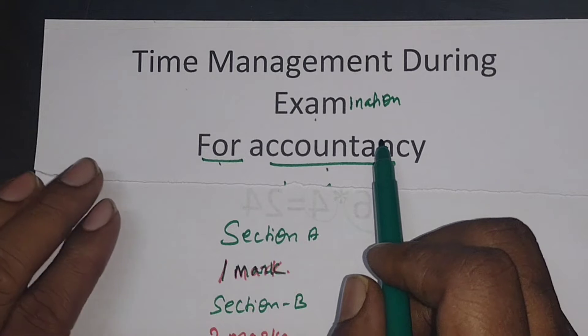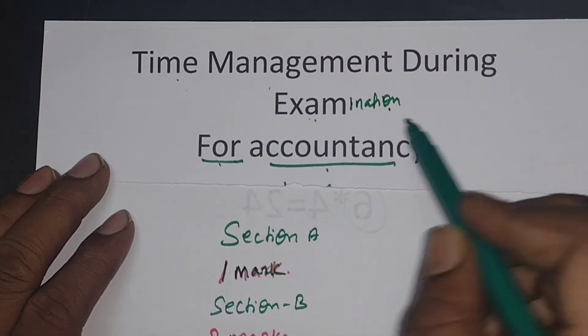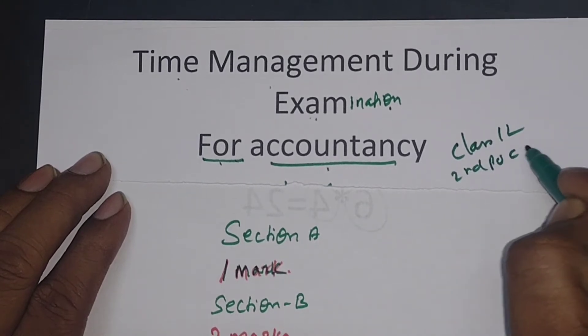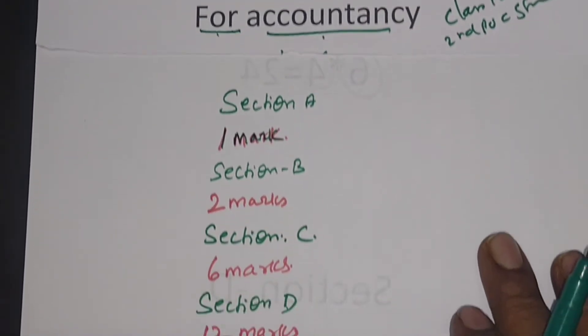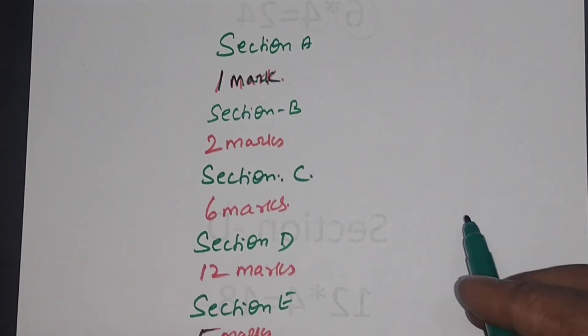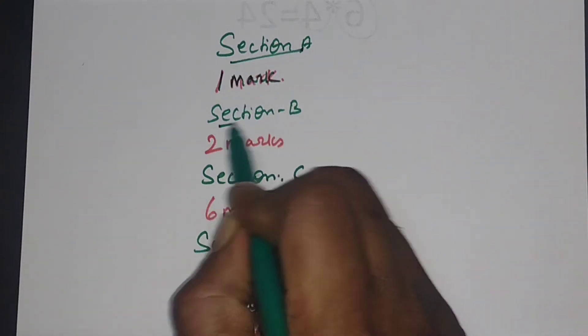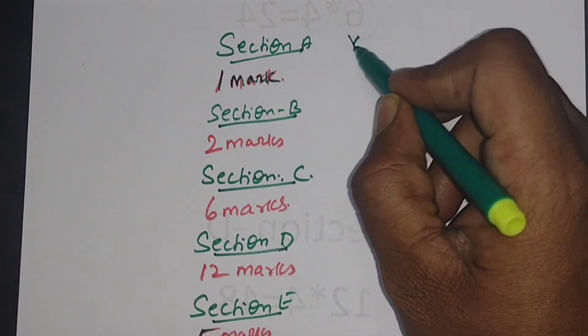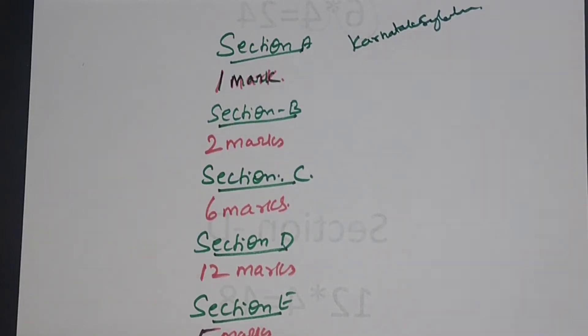Welcome back to Shokmar classes. The most important topic I am covering now is time management during examination for accountancy students, for class 12, that is second PUC students. We are going to discuss how to attend questions in sections A, B, C, D, and E. This is relating to Karnataka syllabus.